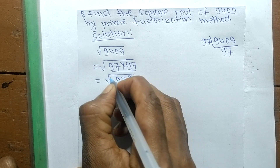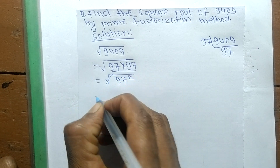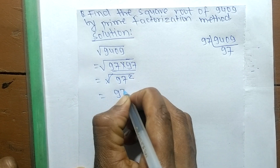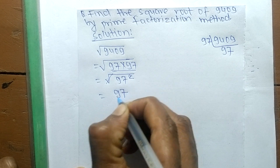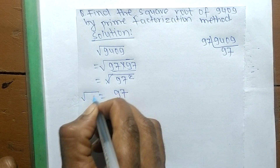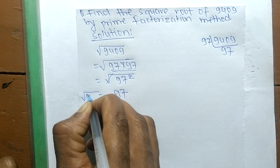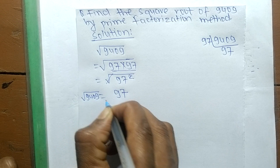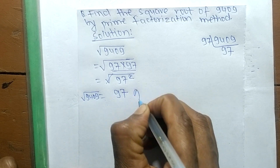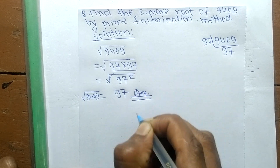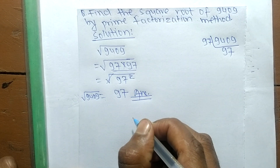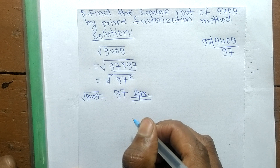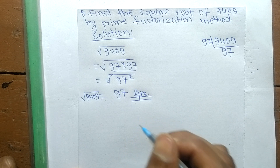The square and the square root cancel each other, so the remaining number is 97. Therefore, the square root of 9409 is equal to 97. That's all for today — thanks for watching.